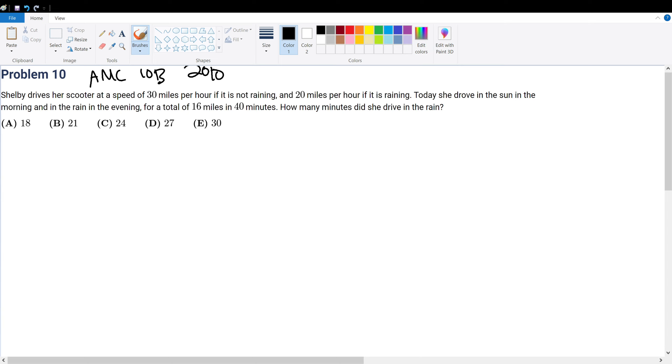AMC 10B 2010 problem 10. Shelby drives her scooter at a speed of 30 miles per hour if it's not raining, 20 miles per hour if it's raining. Today she drove in the sun in the morning and in the rain in the evening for a total of 60 miles and 40 minutes. How many minutes did she drive in the rain?